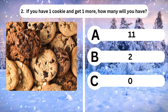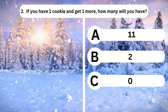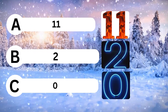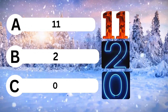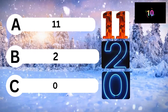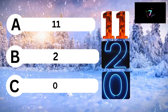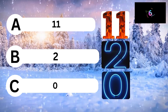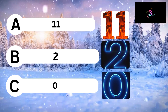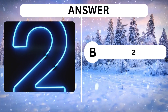Question 2. If you have one cookie and get one more, how many will you have? A. 11. B. 2. C. 0. Answer is B. 2.